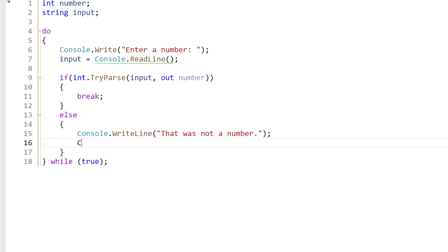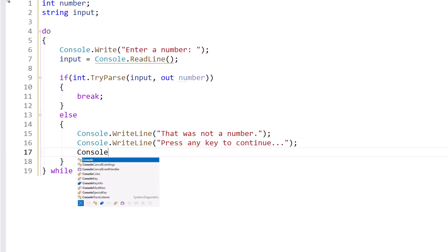And then we can do something like console.write line press any key to continue dot dot dot. And I will show you there's another one called console dot read key, which will just read the next key. And I often use this method for the press any key to continue scenario as we can see here.